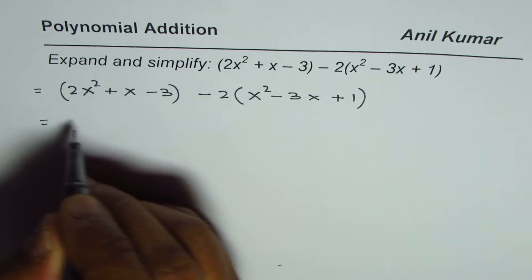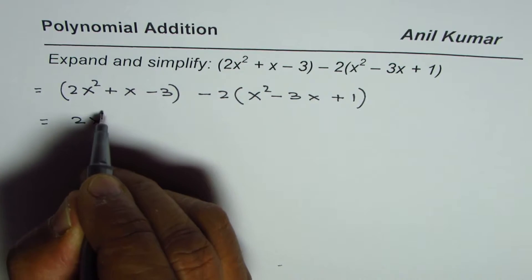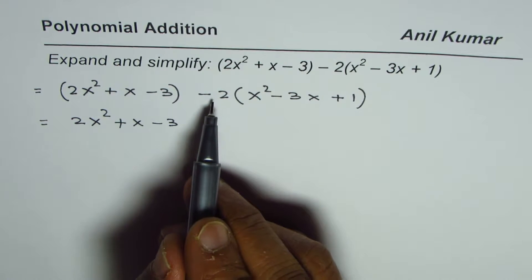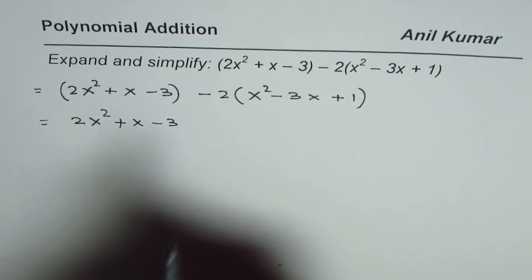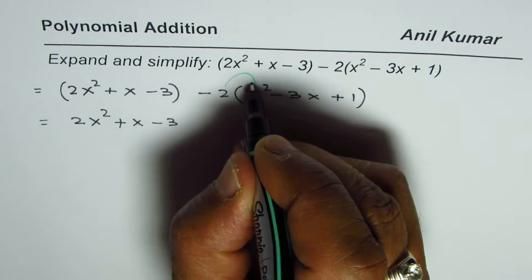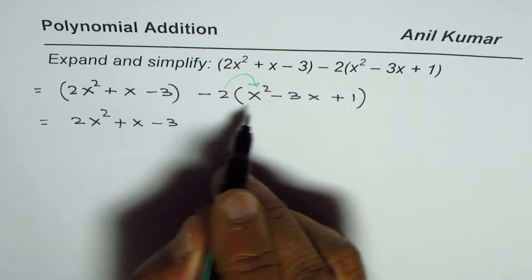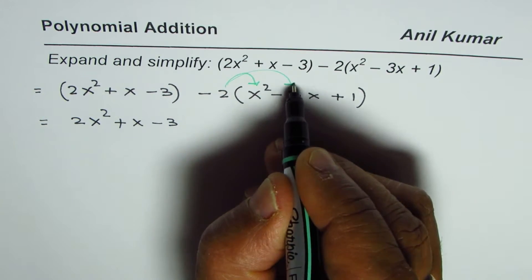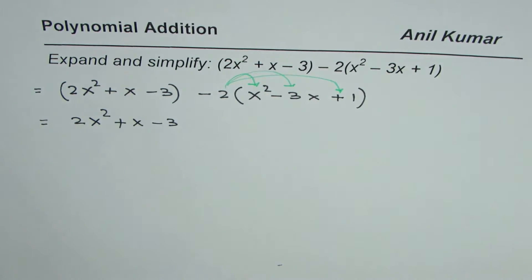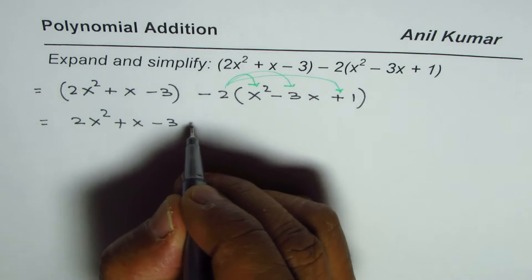It is multiplied by 1, so we'll just get all these three terms as such, which is 2x² + x - 3. Here we are multiplying by -2, so -2 times x². We have to multiply each term by -2: first by x², then by -3x, and then by the number 1.